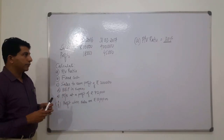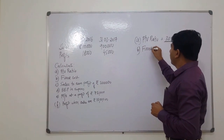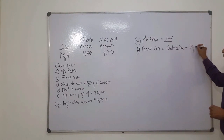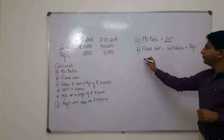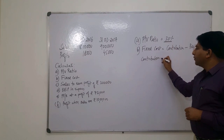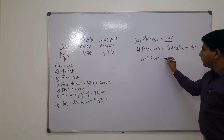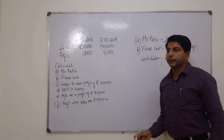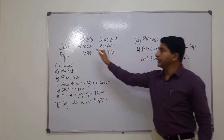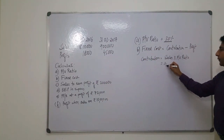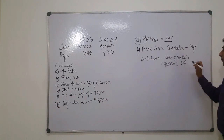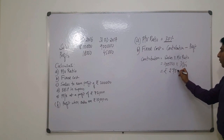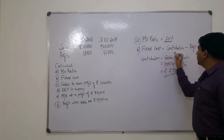The next question asks us to calculate fixed cost. Fixed cost equals contribution minus profit. To calculate contribution, the formula is sales multiplied by PV ratio. Taking sales of 9 lakh multiplied by PV ratio of 30%, we get contribution of Rs 2,70,000. From there we can calculate fixed cost.